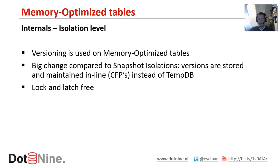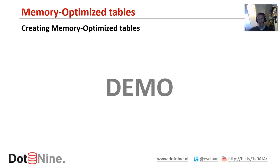Another part of the internals is the isolation level. Memory-optimized tables use versioning, which looks a lot like snapshot isolation. The big difference is that in a CFP the versions are stored and maintained in-line, in the same data and delta files. Snapshot isolation keeps its versions stored inside tempdb — that's a big difference. Memory-optimized tables are also lock and latch free, so there is no locking. Readers don't block writers and writers don't block readers. For more detail on locking and latching, Klaus Aschenbrenner's blog at SQLPassion.at has several articles on that.